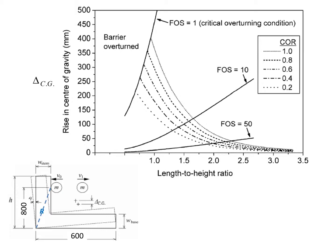Given the value of delta subscript CG, rise in center of gravity, the factor of safety against overturning can be read off directly from this chart.